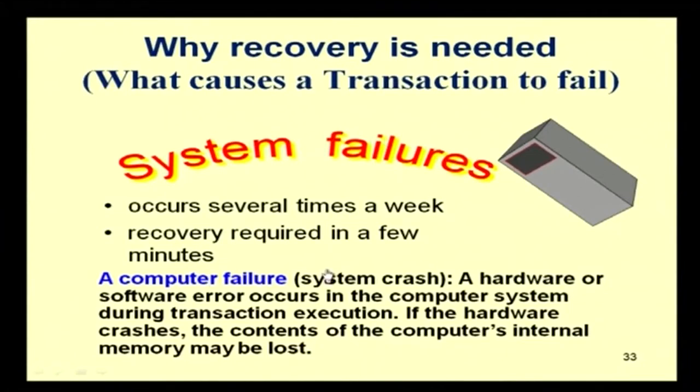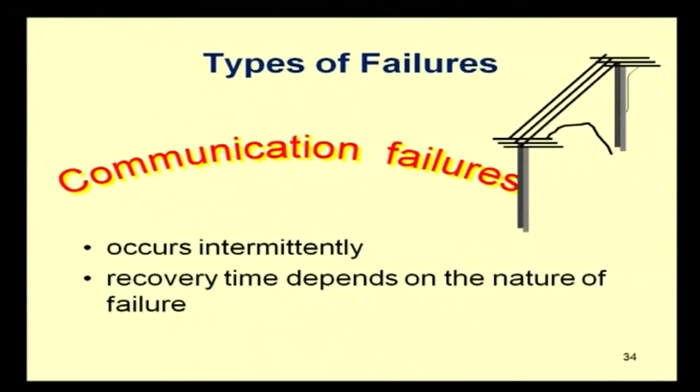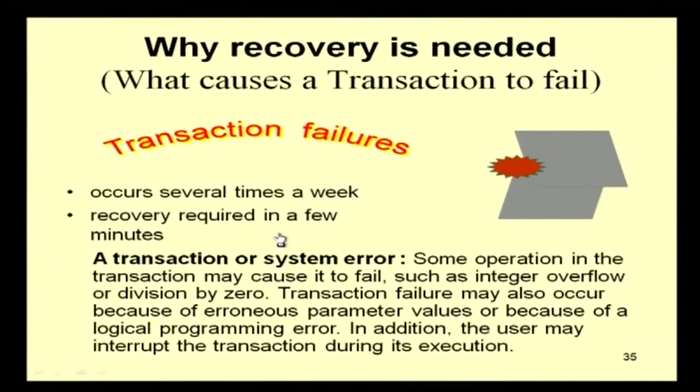Because the transaction has failed, the database is in an inconsistent state and you have to recover. Types of failures: system failures occur several times a week — a hardware or software error during transaction execution may cause the contents of the computer's internal memory to be lost. Transaction failures also occur several times a week; some operation in the transaction may cause it to fail, such as integer overflow or division by zero, or errors in parameter values or logical programming errors.